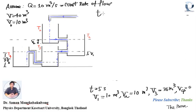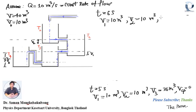When the time t equals 6 seconds, V1 is still equal to 10 mq, V2 is equal to 10 mq, V3 is equal to 30 mq, and now V4 is equal to 10 mq.